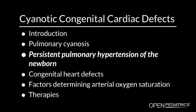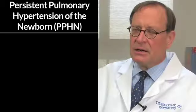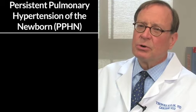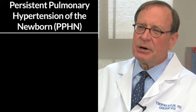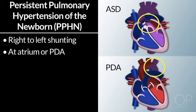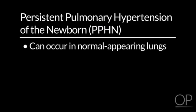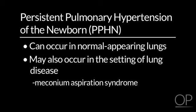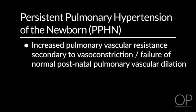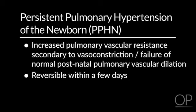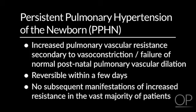Persistent pulmonary hypertension of the newborn causes hypoxemia due to right-to-left shunting at the atrial level or across the PDA due to very high pulmonary vascular resistance. It can occur with otherwise normal appearing lungs or in the setting of lung disease, especially meconium aspiration syndrome. The increased pulmonary vascular resistance in PPHN is due to vasoconstriction and, with true PPHN — meaning not conditions such as alveolar capillary dysplasia — is generally reversible within a few days, with most patients having no subsequent manifestations of increased resistance.